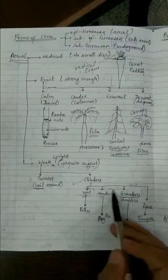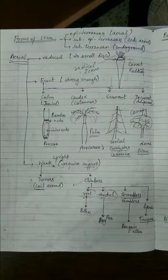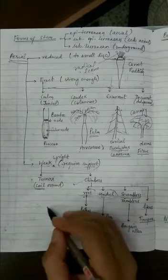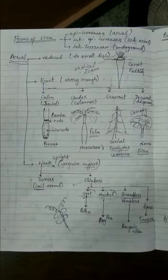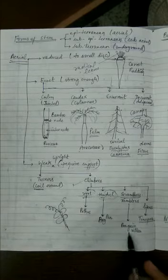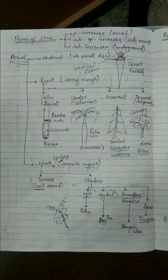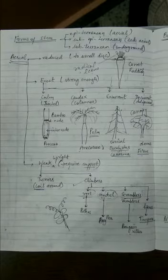Money plant is also called pothos in general English. Another type of climber uses tendrils to climb — for example, the pea plant, which develops tendrils. Tendril climbers use tendrils to climb up. Then there are plants called scramblers or ramblers, which develop thorns to climb.